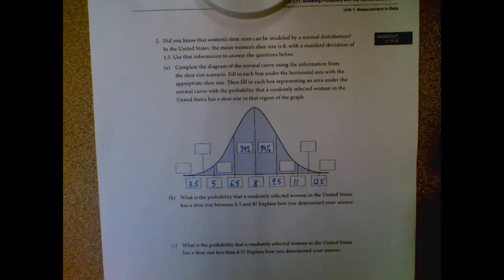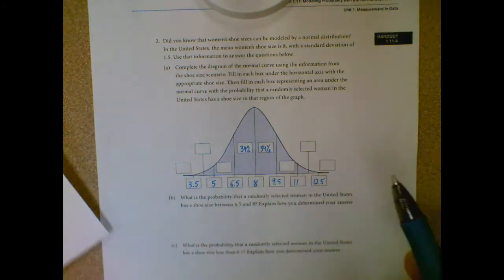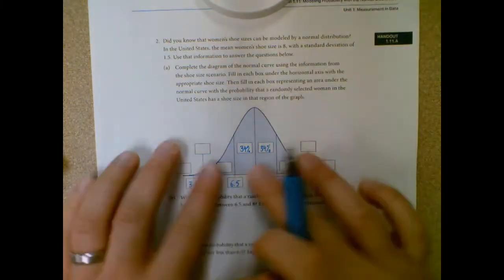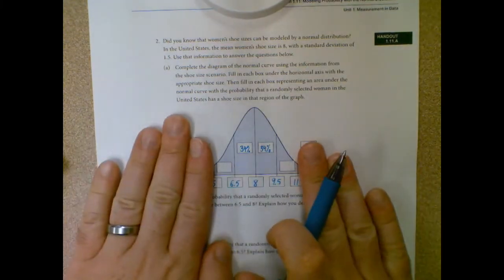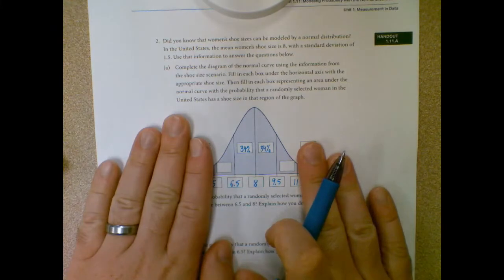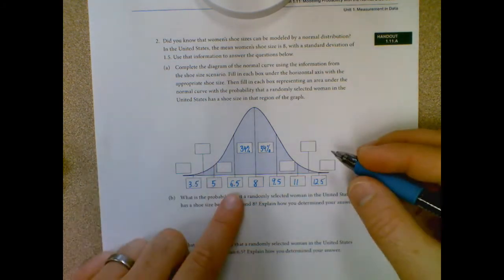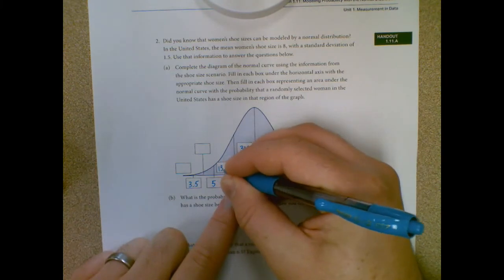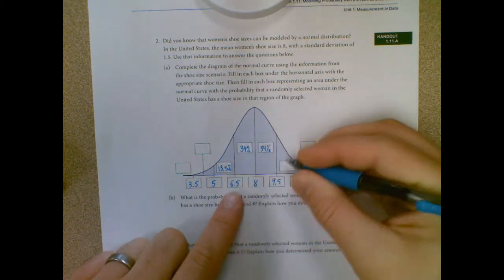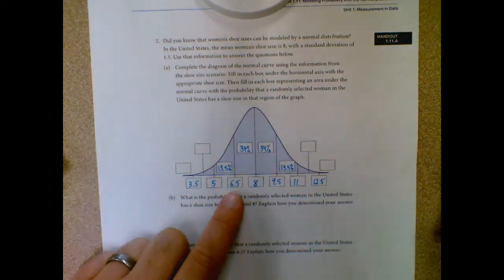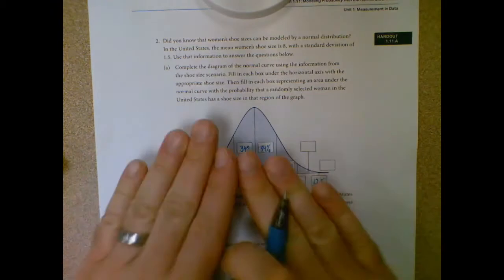Then for these ones, using the same logic that we used when we did set up the other one, I know between these two, this should cover 95% of my graph, but I already counted for that 68. So I can subtract 95 minus 68, get 27, divide that by two, and I get 13.5%. And then once again, just working my way out.